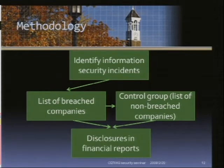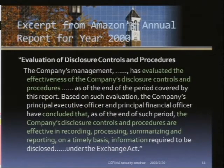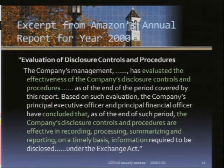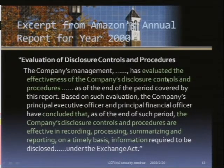With our samples in place, the next step is to collect disclosures in financial reports. This is the disclosure from Amazon's annual report for year 2000. As you can see, it is from the controls report, which has three parts: how the company manages their internal controls and procedures, how they evaluate those controls and procedures, and whether there is any change in their controls and procedures. This particular section is the evaluation part, where the company evaluated the effectiveness of their disclosure controls and procedures.